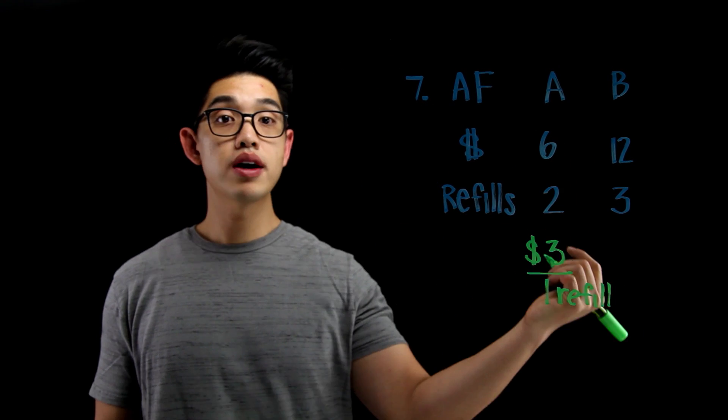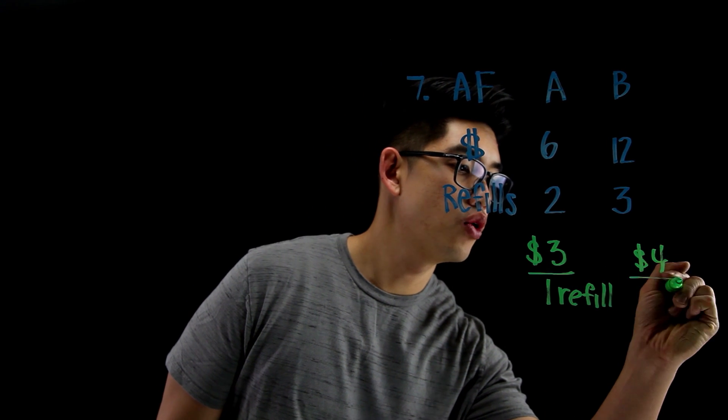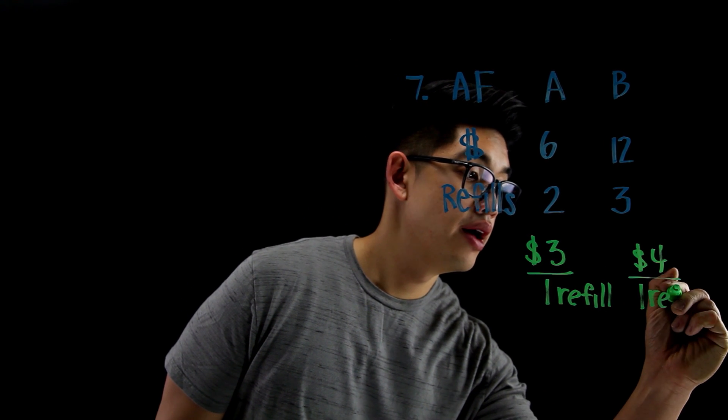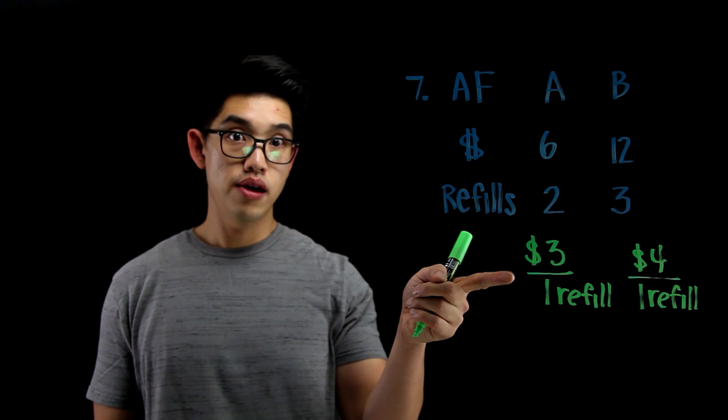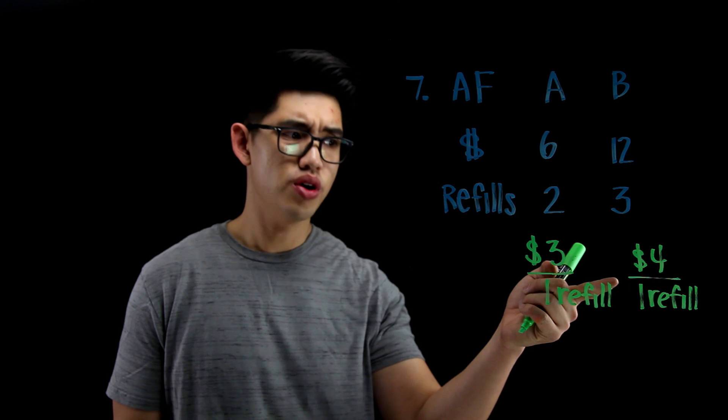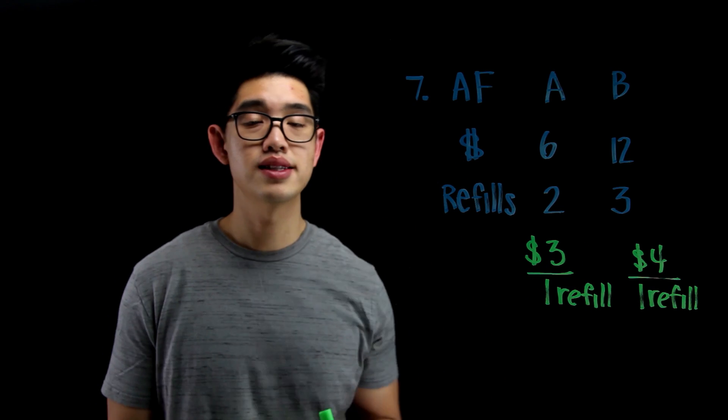And then for this one right here, 12 divided by 3, it's going to be $4 for one refill. And I don't know about you, I think I would choose A because you get $3 for a refill instead of $4 for one refill. This one is cheaper by $1. So A is the answer.